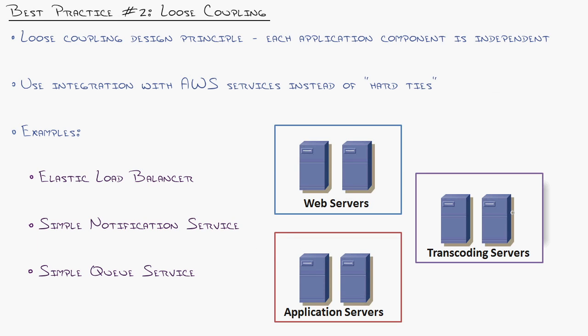Tying right into that redundant design is a concept known as loose coupling. Loose coupling means the looser that you build your design, as in the more distributed and the less dependent on each other, the better the design you're going to have. Meaning every application component is independent from the other.